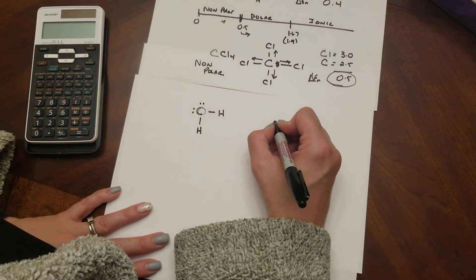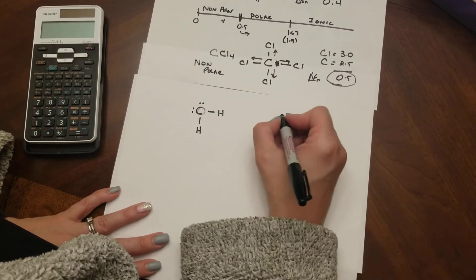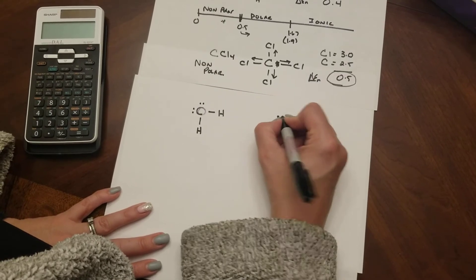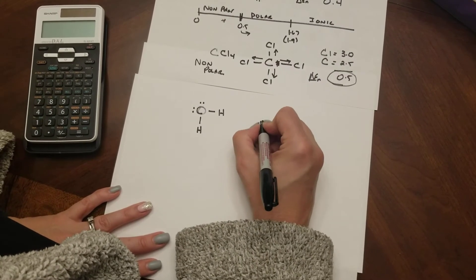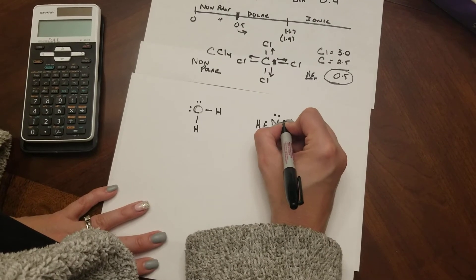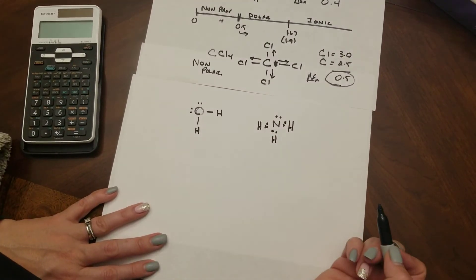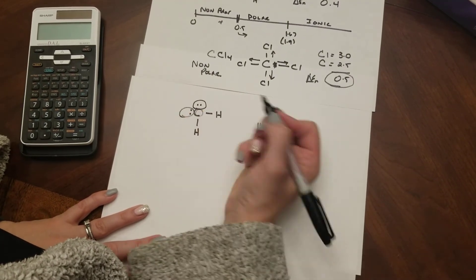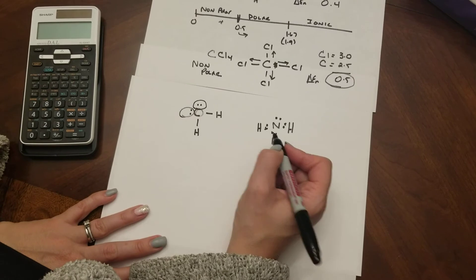We have shared electron pairs between the oxygens and the hydrogens and unpaired electrons in two spots. Here's another molecule look at nitrogen. Nitrogen is in group five on the periodic table and has one, two, three, four, five electrons. Each hydrogen comes in and shares here.